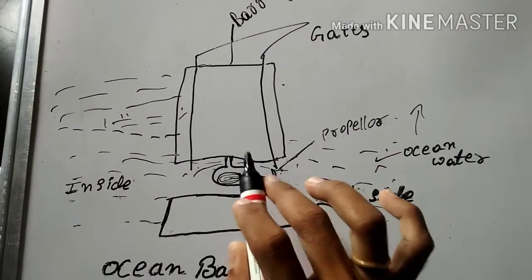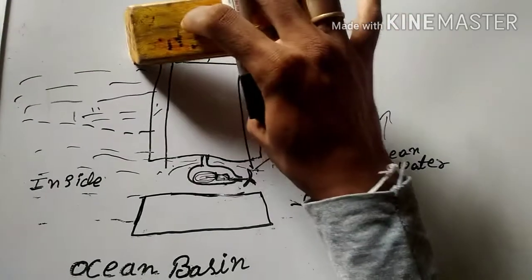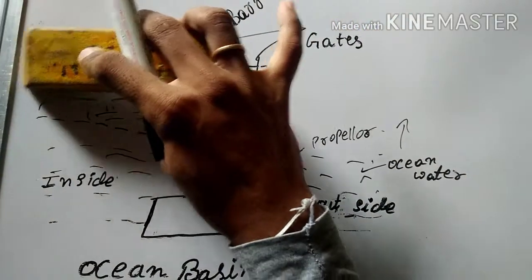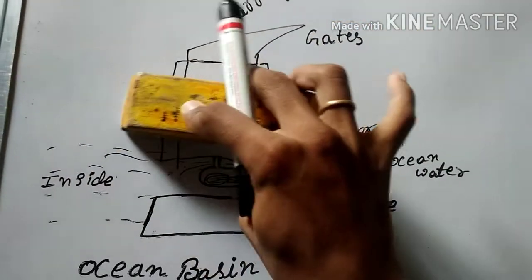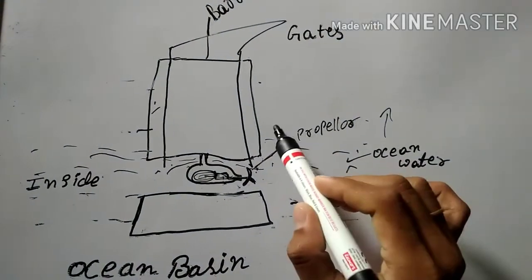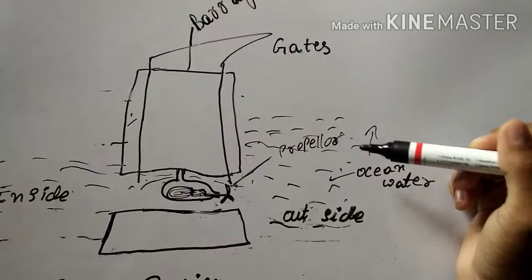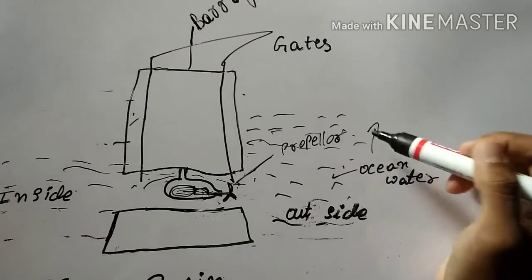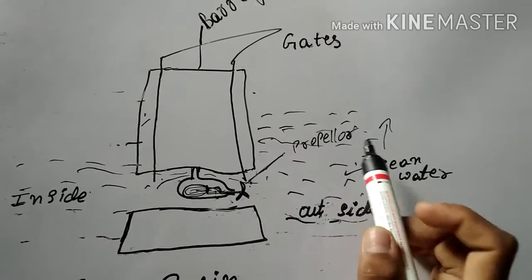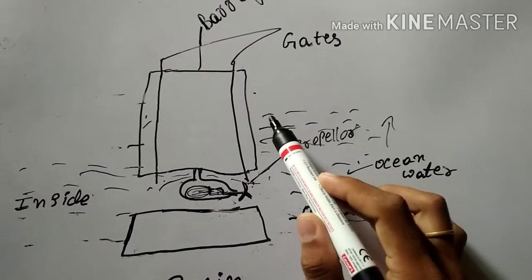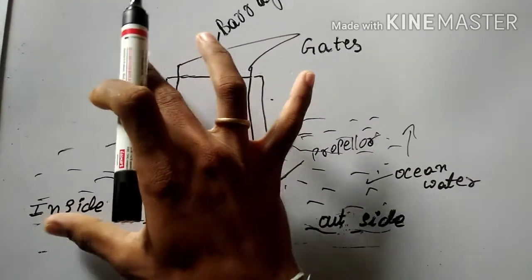By releasing the water from inside, the water level inside the barrage decreases while the water level outside increases. The gates of the barrage are then closed. As water outside the barrage increases, the pressure also increases. Whenever the pressure increases, the water starts moving towards the inside, and as the water level inside increases, the pressure also increases.